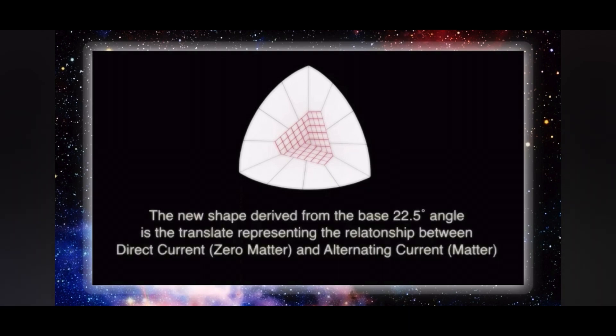The new shape derived from the base 22.5 degree angle is the translate representing the relationship between direct current, which is zero matter, and alternating current, which is matter.